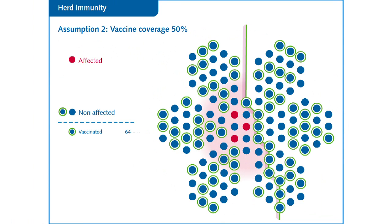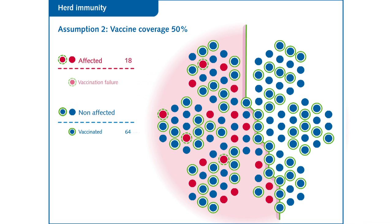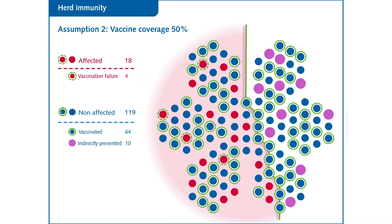The individuals on the right have been protected. In the end, part of the population was protected directly by the vaccine, as expected. And another part of the population was protected because it was not exposed to the disease. It is the surrounding individuals that blocked the spread of the pathogen. The phenomenon that provides this extra protection is called herd immunity. Here, the individuals protected by herd immunity appear in violet.